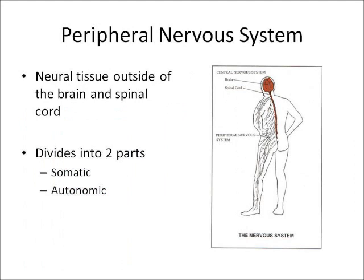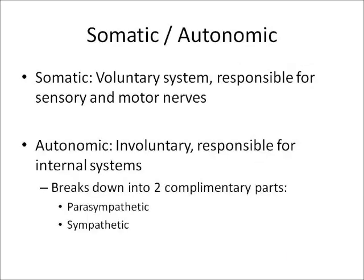The peripheral nervous system consists of all neural tissue outside of the brain and spinal cord. It divides into two parts: the somatic and autonomic systems. The somatic system is a voluntary system responsible for sensory and motor nerves. The autonomic system is involuntary and responsible for internal systems, breaking down into the parasympathetic and sympathetic.